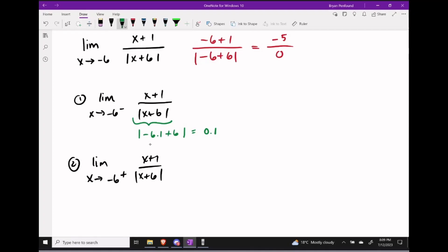If I were to make these evaluations a little bit smaller, for example taking negative 6.01 instead, then I'd get a number that's even closer to 0, like 0.01 after I do the evaluation.